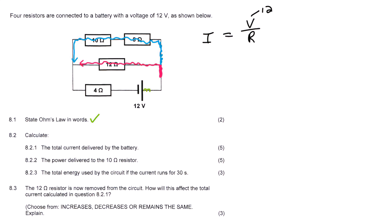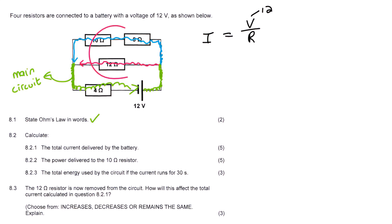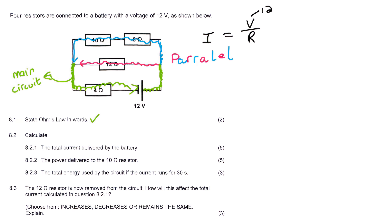Let's say that the main current was in green. All of the current is going to meet up over here again and then carry on. The green part is part of the main circuit, and then the blue and the pink part — those are going to be in parallel.